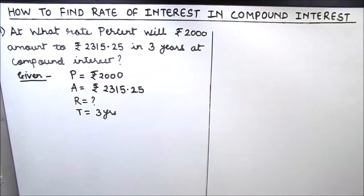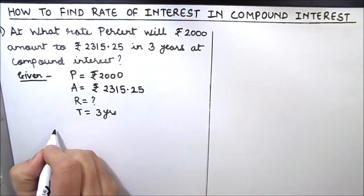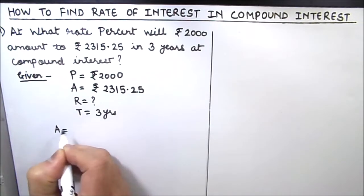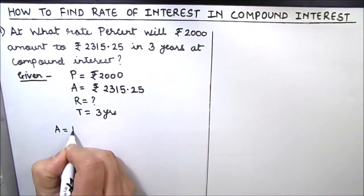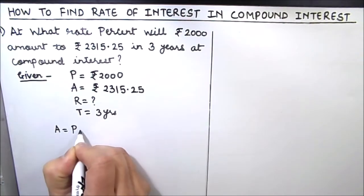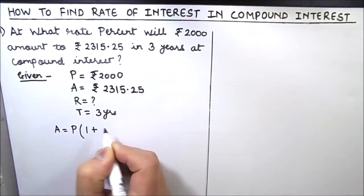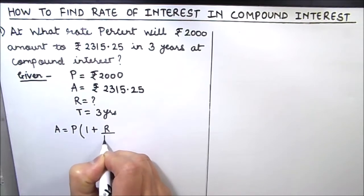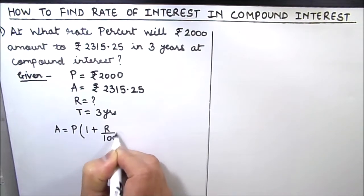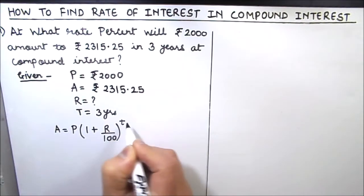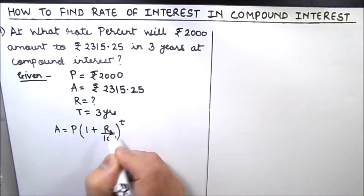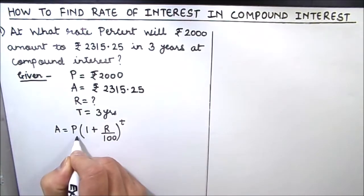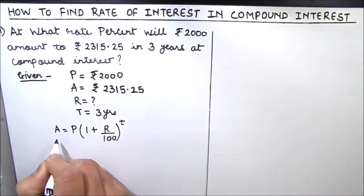We'll first write the formula for finding the amount. Amount is equal to principal times 1 plus r divided by 100, raised to power t. Here t is the time period, r is the rate of interest, p is the principal amount, and a is the amount.